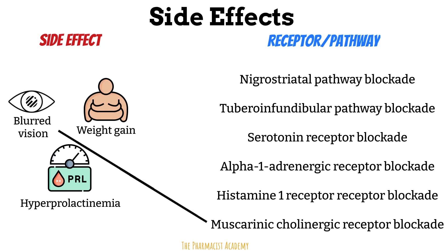Weight gain is due to serotonin receptor inhibition. It can also be caused by inhibition of histamine receptors and dopamine receptors in the hypothalamus, interfering with the regulation of hunger and satiety, resulting in increased food intake and other metabolic changes like diabetes.